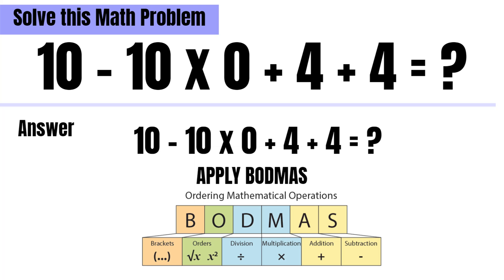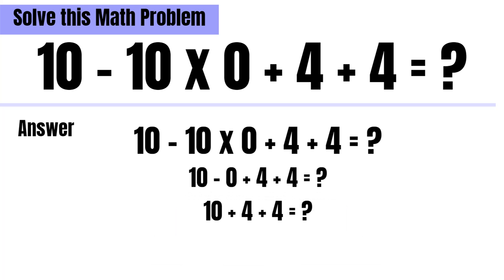So in this equation, first we will do the multiplication, which will give you 10 into 0, which is equal to 0.